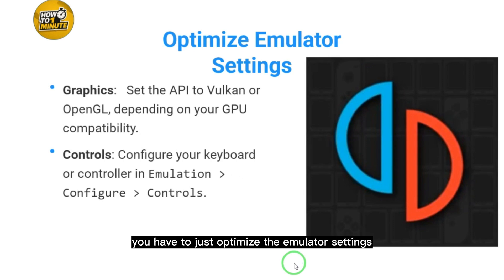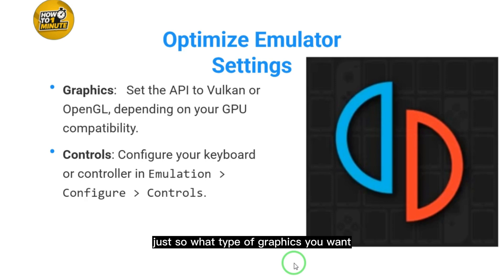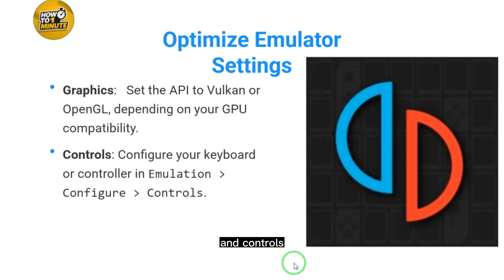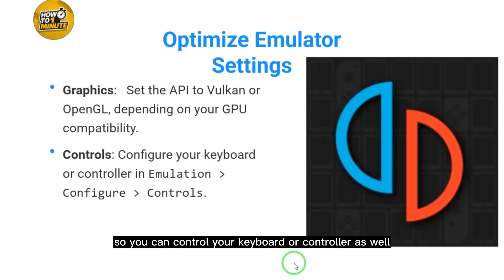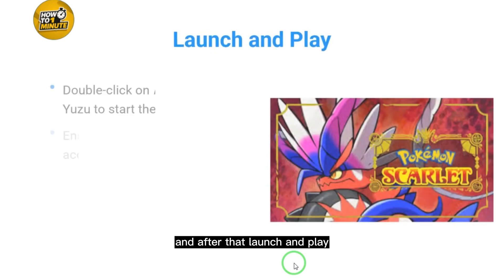Next, optimize the emulator settings. Set the graphics API to Vulkan or OpenGL depending on your GPU compatibility. For controls, configure your keyboard or controller via the Emulation > Configure > Controls menu so you can control the game with either input device.